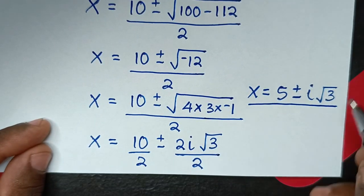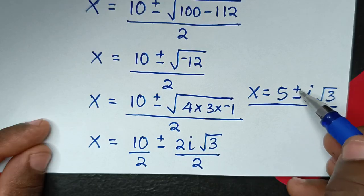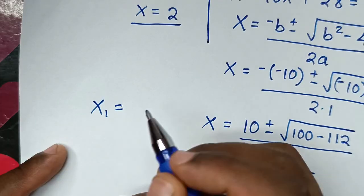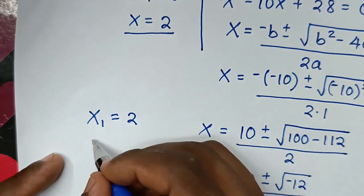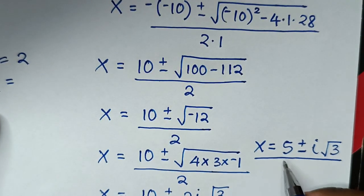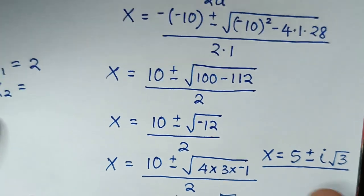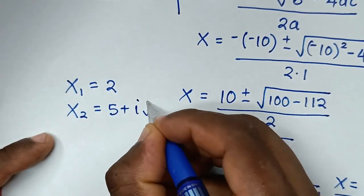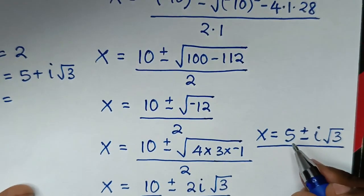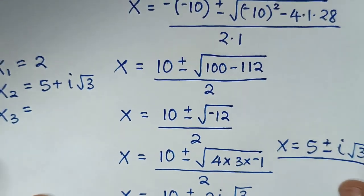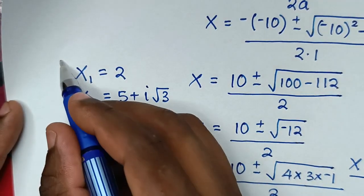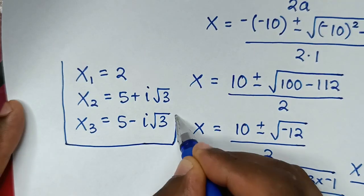Because of the ± sign, we have two complex solutions. The first value is x = 2 (real solution), the second is x = 5 + i√3, and the third is x = 5 - i√3. So these are all the values of x: one real solution and two complex solutions.